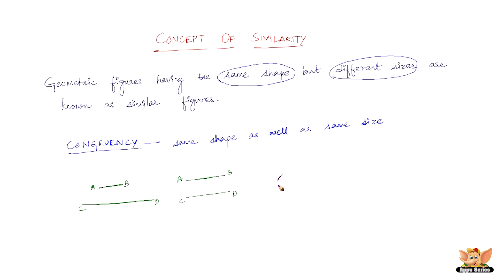Let's take circles. We've got one circle and another circle of a different size. As far as the shape is concerned, both figures are circles — same shape. A circle, smaller or bigger, is still a circle. So figures one and two are definitely similar to each other because both are circles, but they are definitely not congruent to each other because they are not of the same size.